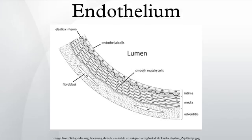The endothelium is the thin layer of cells that lines the interior surface of blood vessels and lymphatic vessels, forming an interface between circulating blood or lymph in the lumen and the rest of the vessel wall. The cells that form the endothelium are called endothelial cells. Endothelial cells in direct contact with blood are called vascular endothelial cells, whereas those in direct contact with lymph are known as lymphatic endothelial cells. Vascular endothelial cells line the entire circulatory system, from the heart to the smallest capillaries.